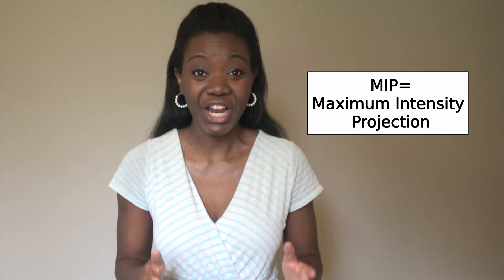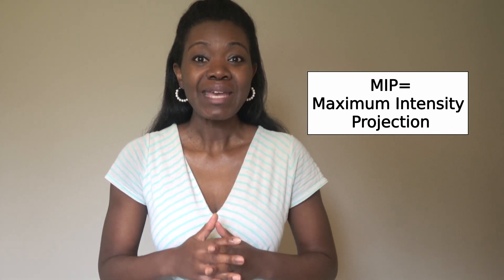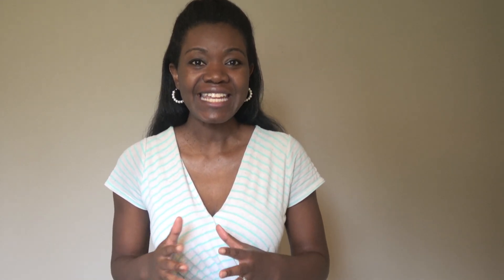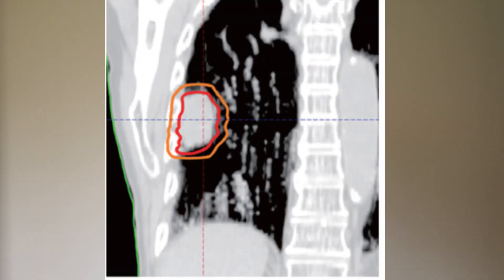This is where MIP comes in. MIP stands for Maximum Intensity Projection. Basically, what this means is that the highest intensity on each view throughout a 3D volume is projected onto a 2D image. It sounds complicated, but really all this does is allow us to visualize the full range of motion of a dense tumor surrounded by other non-dense tissue.